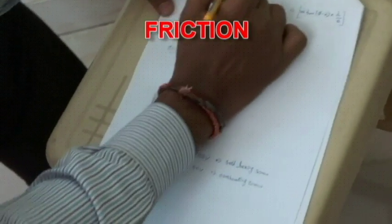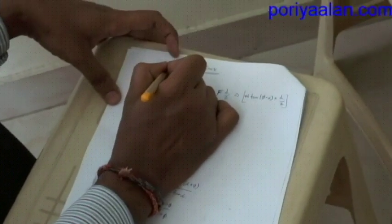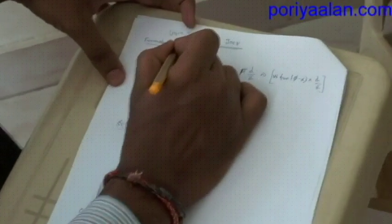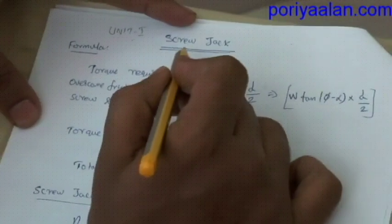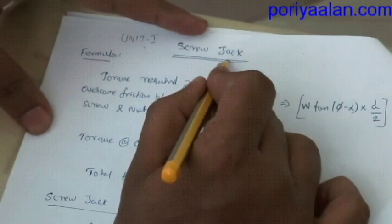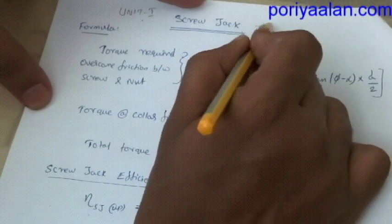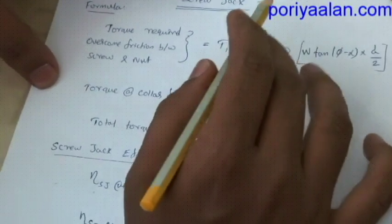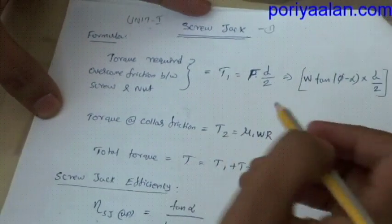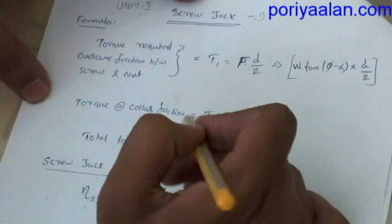In the first chapter of Unit 5, there is a screw and nut, then a screw jack. There is the same formula for the screw and nut, and then a collar.